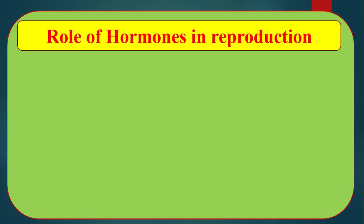Role of hormones in reproduction. In the previous chapter, we discussed different endocrine glands, hormones, and their functions. Here, we will mention some glands and hormones directly related with reproduction. Number 1: Pituitary gland. The pituitary gland is one of the important glands and is present in the brain. It produces gonadotropin, TSH, prolactin, etc., and these hormones help in reproduction in the human body.